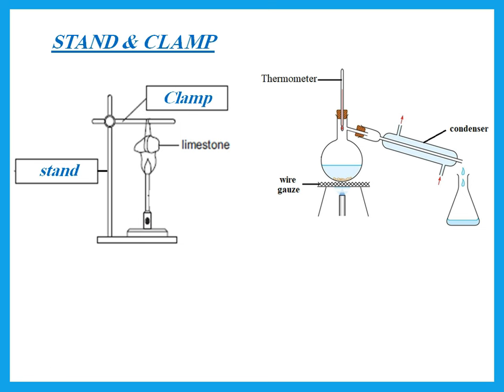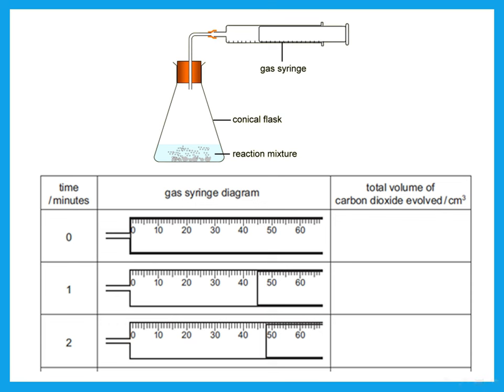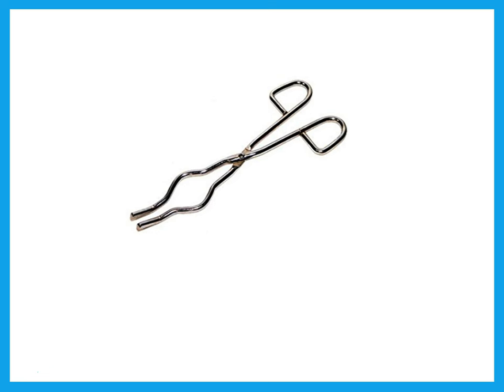This is the wire gauze — what we put the flask on. This is a condenser; remember, the water goes in from the bottom and out from the top. If we're trying to measure volumes of a gas, we use a gas syringe. At time zero, the plunger is all the way inside, so the volume is zero — no gas. As the gas collects in the syringe, the plunger moves to the right. At one minute it reads 45 cm³; we don't put units inside the table. At time two, it is 48 cm³. This is tongs — used to hold a hot crucible or hot metal like magnesium.